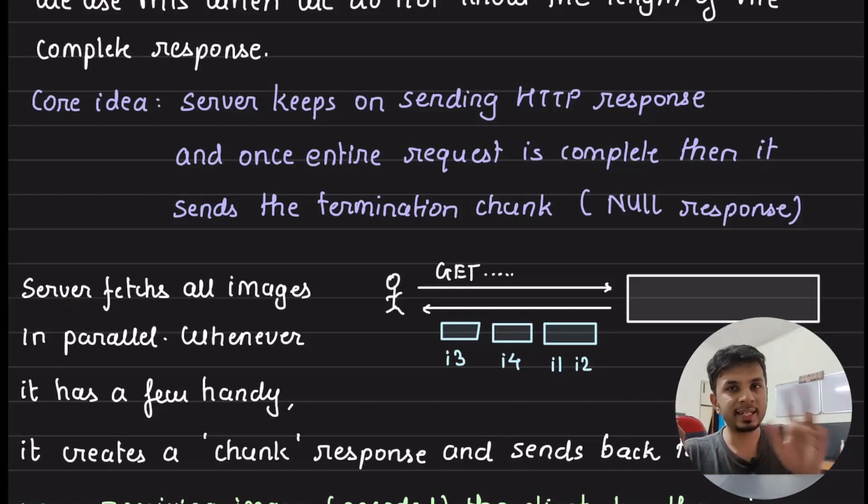It sends the content length header in the response itself, so that your client also knows that these many bytes are coming my way. But there are cases where your server doesn't even know how many bytes it would need to send. A classic case with images that we were talking about. That you requested 10 images. Your server doesn't know how many bytes would it require. That is where you use something called as chunked transfer.